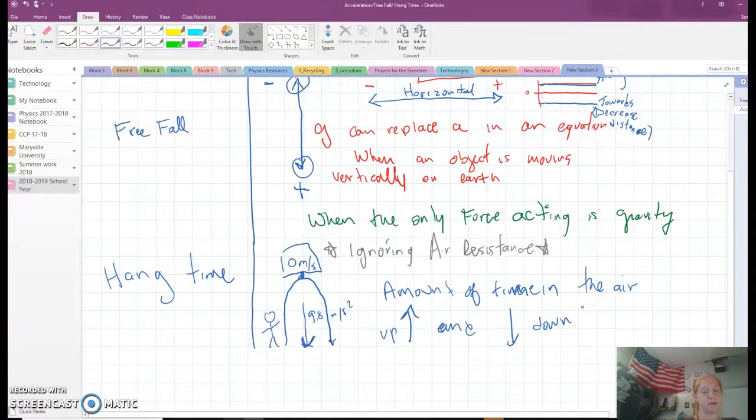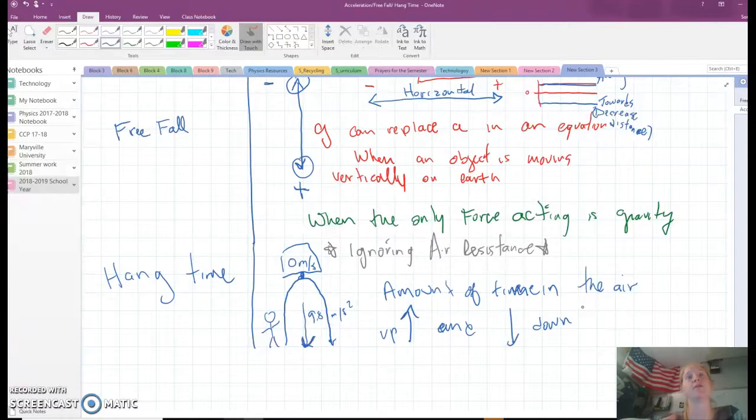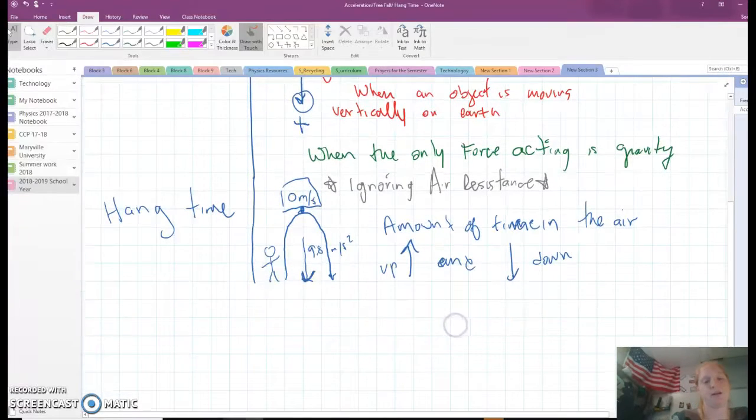So this is going to be a little bit different from free fall. Because free fall is always, like, when we're thinking free fall, it's one directional. It's one direction in the thing. Where hang time, you're going up and down. So you have to recognize there's a difference.